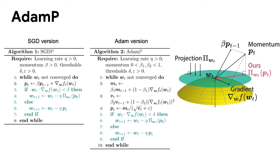We create an algorithm to detect scale invariant and perform the projection operation on scale invariant parameters. We add this algorithm to the SGD and Adam optimizers, and make new optimizers. These new optimizers are named SGDP and AdamP.